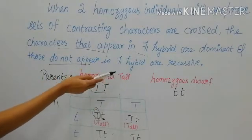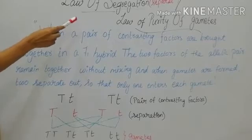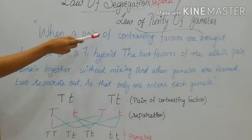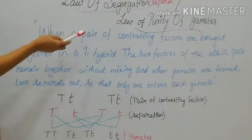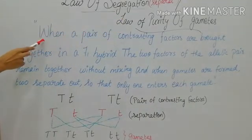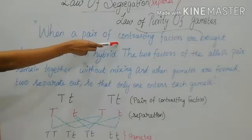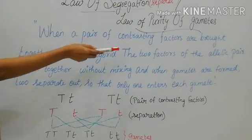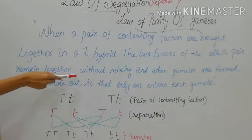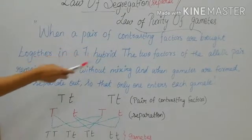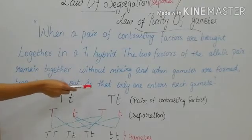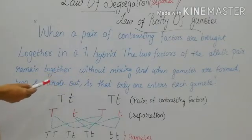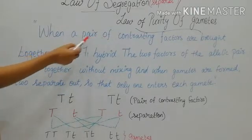The next law is Law of Segregation, also known as Law of Purity of Gametes. This law states that when a pair of contrasting factors are brought together in an F1 hybrid, the two factors of the allelic pair remain together without mixing. And when gametes are formed, they separate out so that only one enters each gamete.